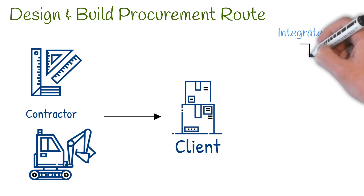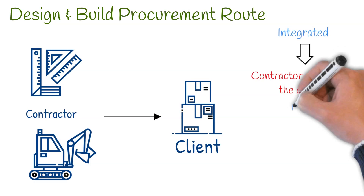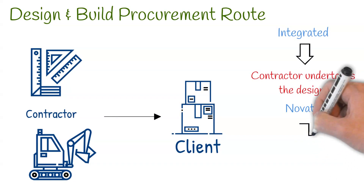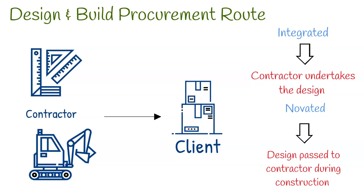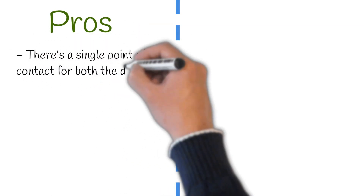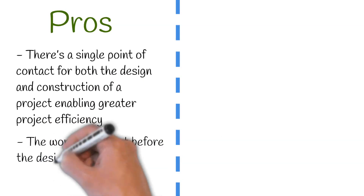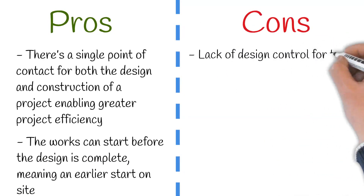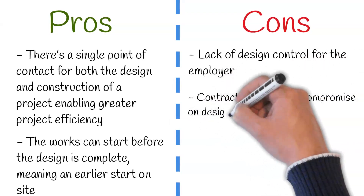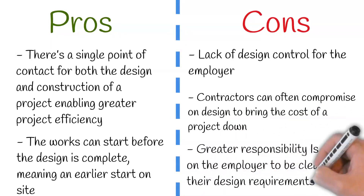Under integrated design and build, the contractor undertakes the design and construction based on a set of requirements from the employer. Under novated design and build, the employer hires a design team to complete the design before it is novated to the contractor during construction, who will then assume design responsibility. Pros include: there's a single point of contact for both the design and construction of a project, enabling greater project efficiency, and works can start before the design is complete, meaning an earlier start time on site. Cons include: there's a lack of design control for the employer, contractors can often compromise on design to bring the cost down, and there is greater responsibility placed on the employer to be clear with their design requirements.